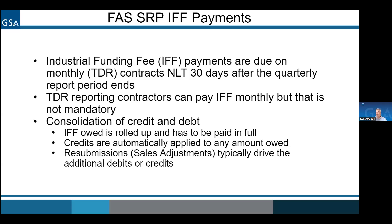The next step is the industrial funding fee — how to pay it. It's due no later than 30 days after the quarterly report period ends. So even if you're a monthly contract, you still have to pay 30 days after the quarter ends. You can do it more often than that, but you don't have to pay every month — the payment can happen once every quarter, or four times a year. There is also credit and debit: if you did a sales adjustment and paid your industrial funding fee and then realized it was zero sales, you paid too much and that becomes a credit for the next period.